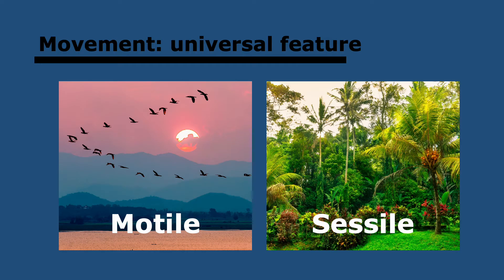All living organisms move in some shape or form. There are movements within the body, such as peristalsis or ventilation. And then we have locomotion, which is the actual movement of an organism from one place to another. Organisms that only have those internal movements are called sessile — so that could be plants. And then organisms that can also move from one place to another are called motile, such as birds or humans.